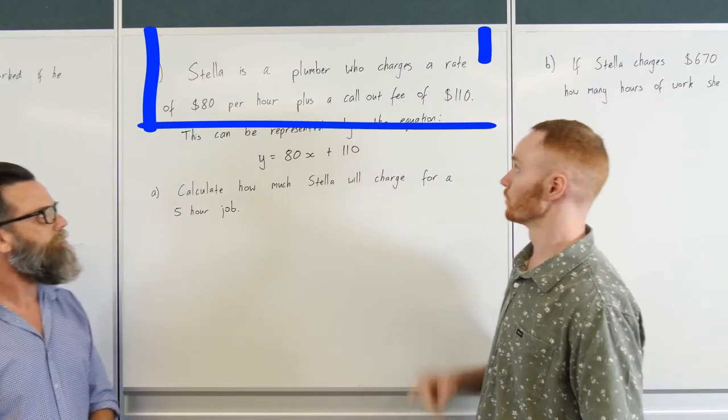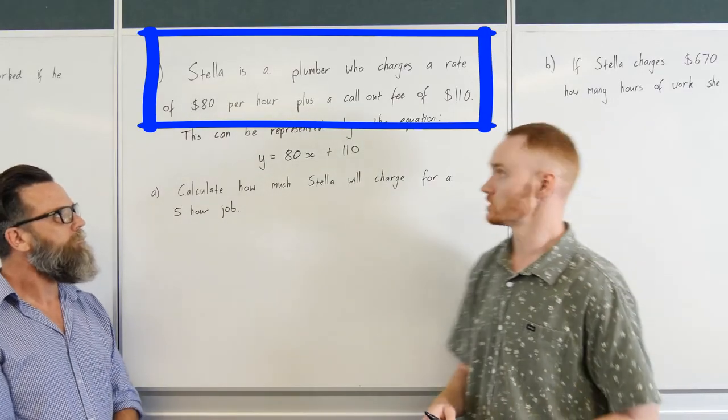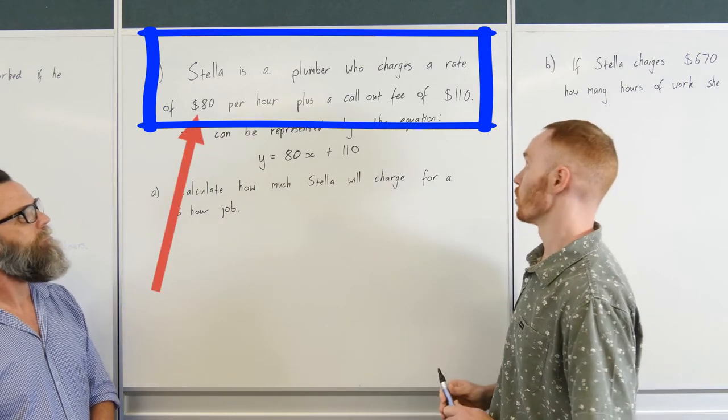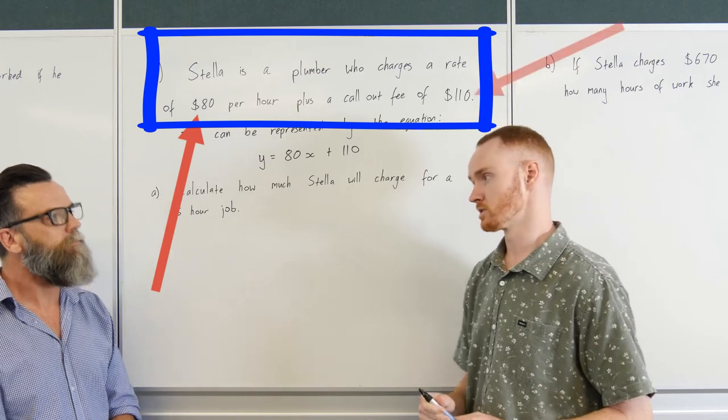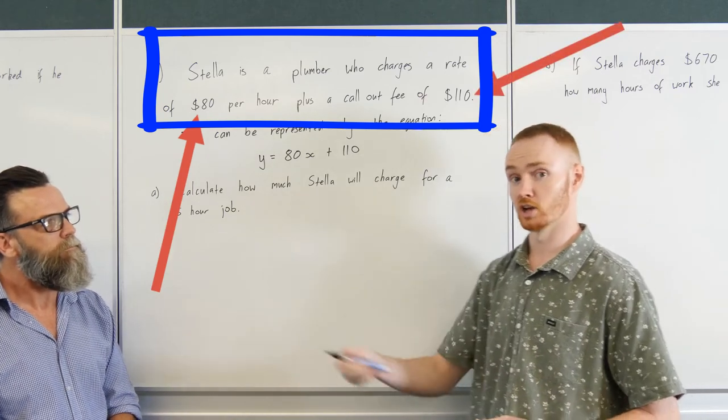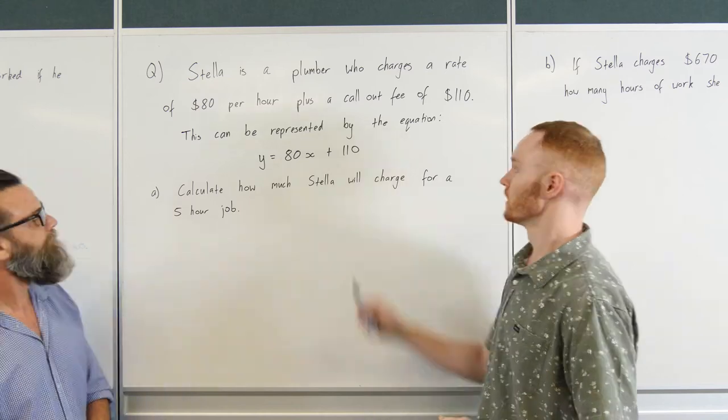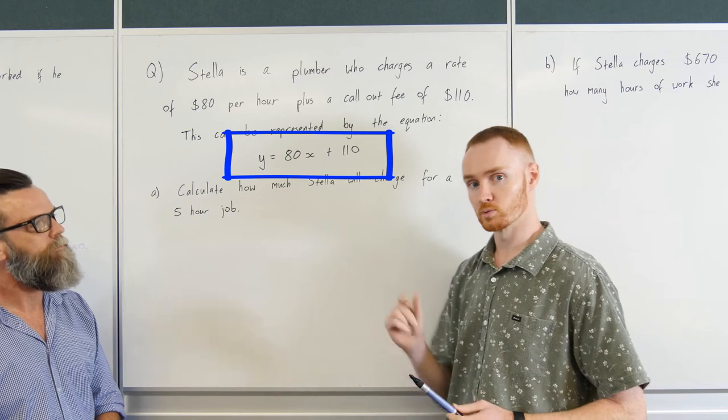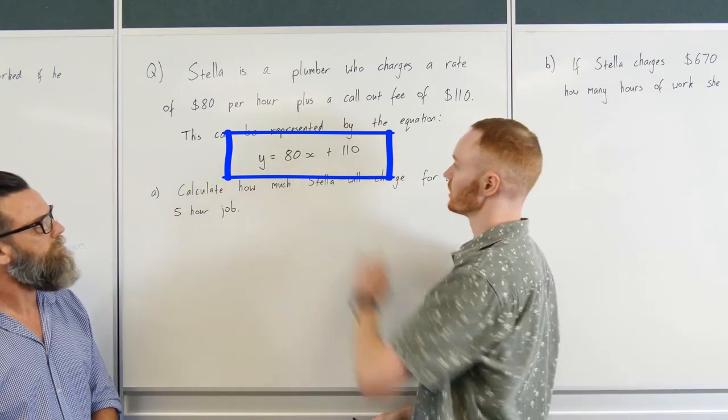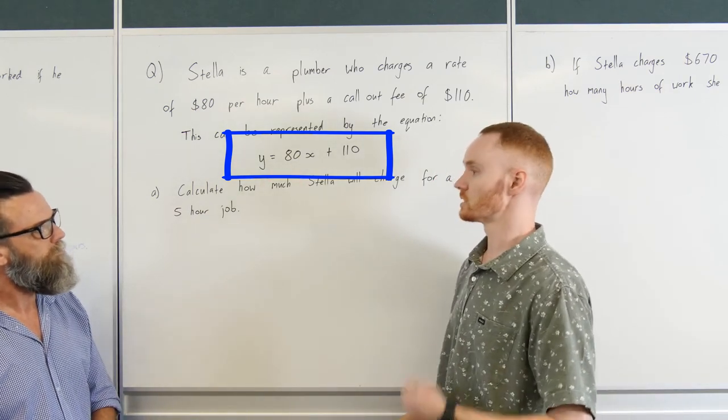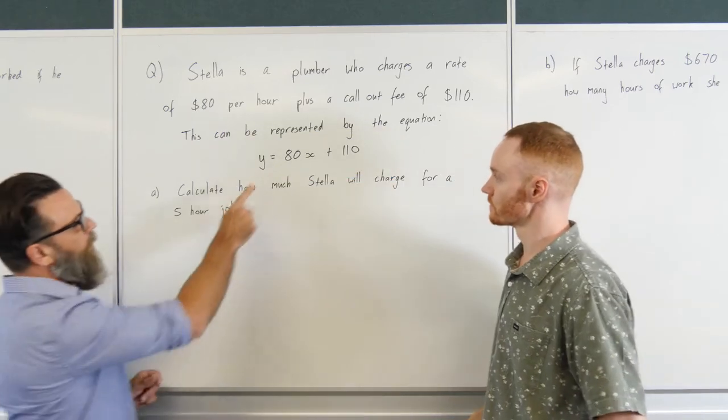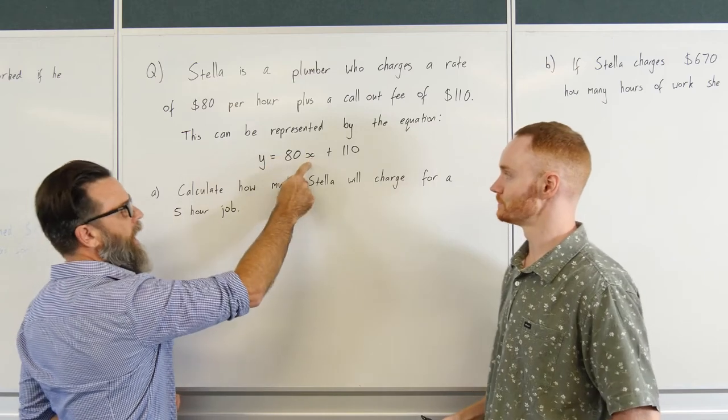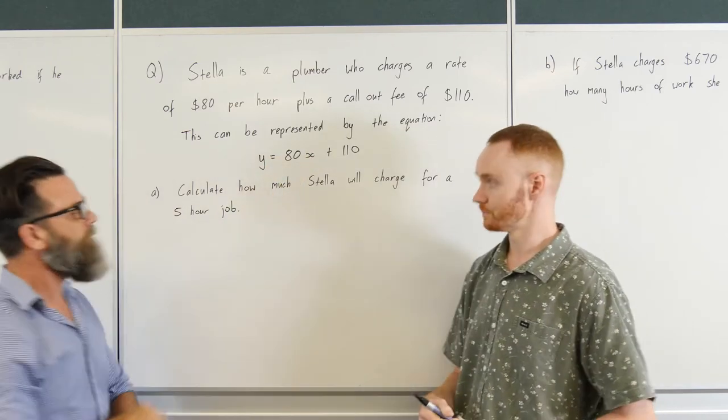So this question I've got here today. We've got Stella is a plumber and she charges a rate of $80 per hour which is her rate. Plus a call-out fee of $110. So just to drive out to your house to do the work she's charging you $110. Now this can also be represented by a linear equation. Looks similar to our last example just with a little change. We've got y equals 80x plus that $110. And from this y would still be the amount of money that she earns overall and x would still be the number of hours that she works.